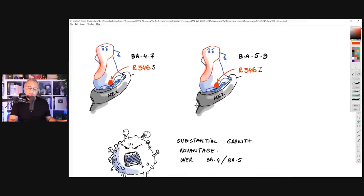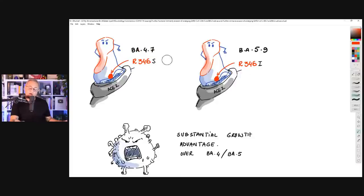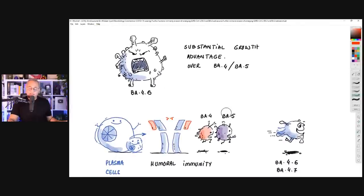A similar mutation in BA.4.7, the one above was BA.4.6, this is BA.4.7. This also has R346S. So the replaced amino acid is S. Then BA.5.9 also have this mutation. And they have R346I. So there are some variants with R346K. Some, as you saw, BA.4.6, that is T. Then BA.4.7 is S, and 9 is I. These are the mutations.